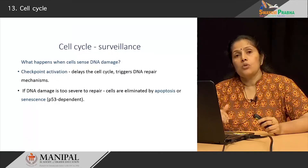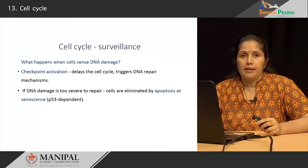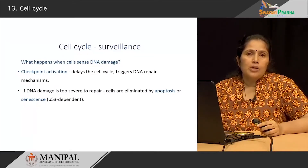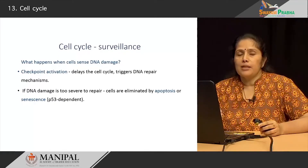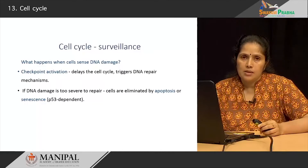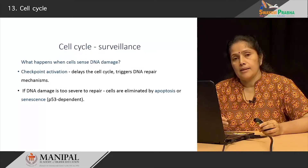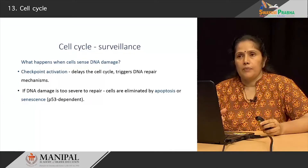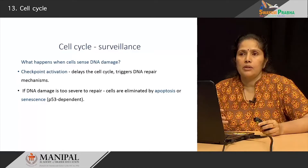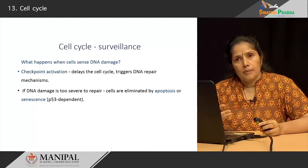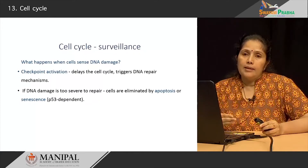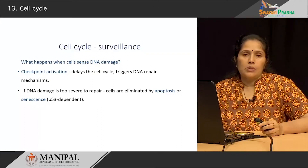If the DNA damage is too severe to be repaired by the repairing genes, these cells will have to be eliminated — the body cannot allow such cells to replicate. There are two mechanisms for removing such cells: by apoptosis or via senescence. Cell senescence is a p53-dependent process. This is a very interesting and unique process that occurs regularly within our body.